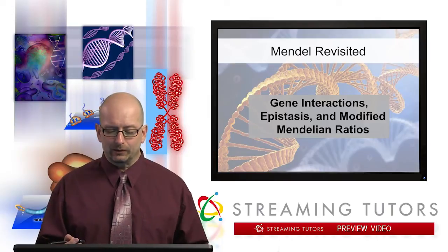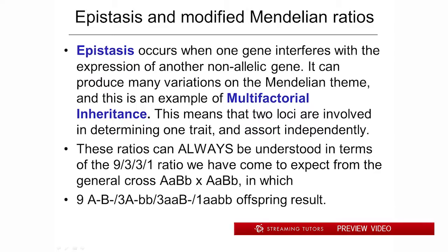So let's take a look at a couple of terms. It's very important to understand not only the terminology, the name of it, but what we mean by it. A very important term here is called epistasis. Epistasis will often — though it's not the only thing — lead to these modified Mendelian ratios that we're going to be dealing with in a moment.